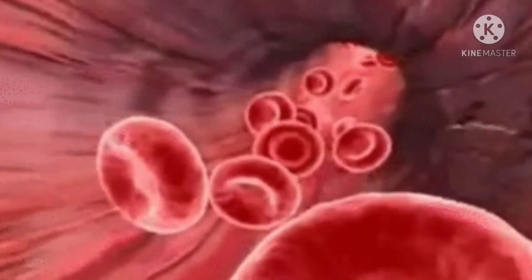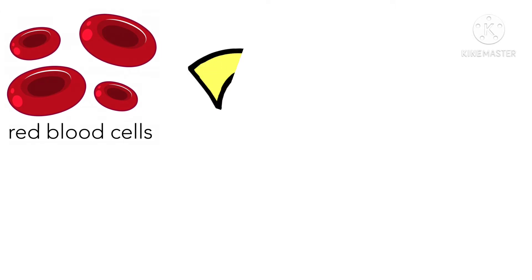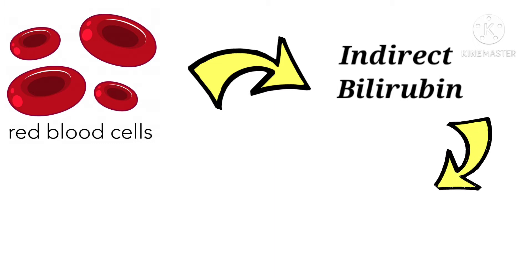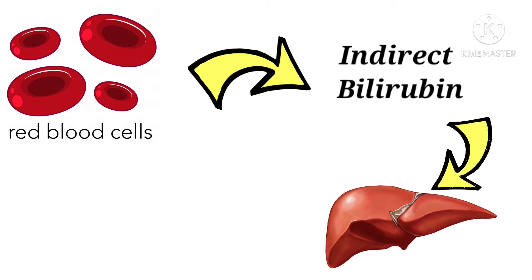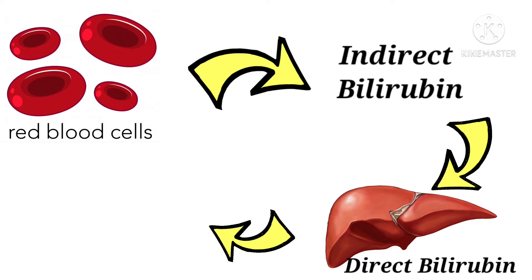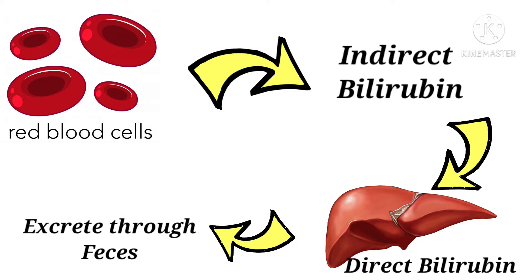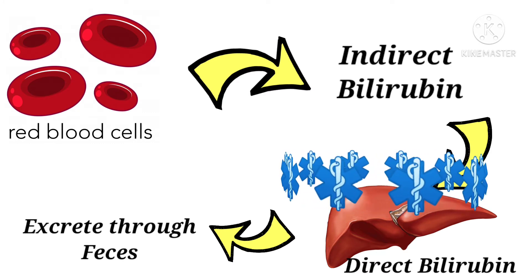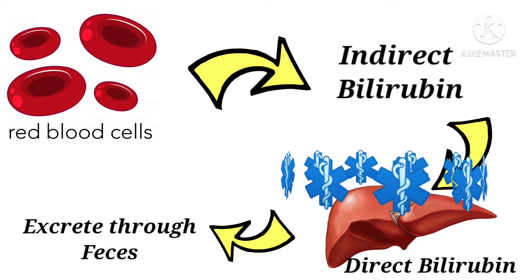Red blood cells have a lifespan of 120 days. After 120 days, these red blood cells die, releasing indirect bilirubin. This indirect bilirubin enters the liver and converts into direct bilirubin, also called conjugated bilirubin. Later, this direct bilirubin is excreted through feces.